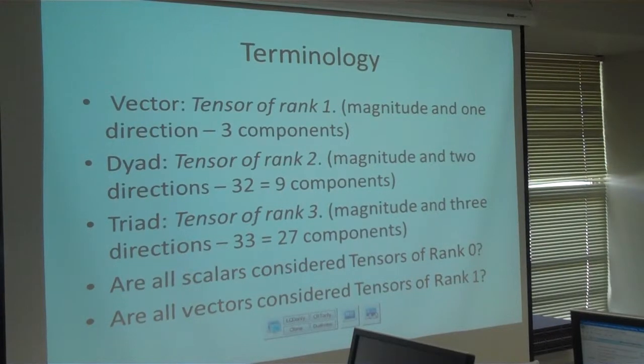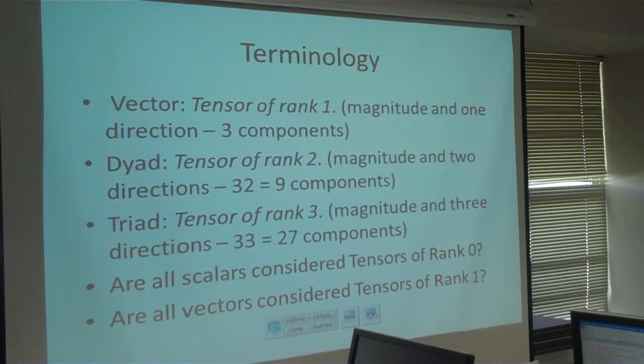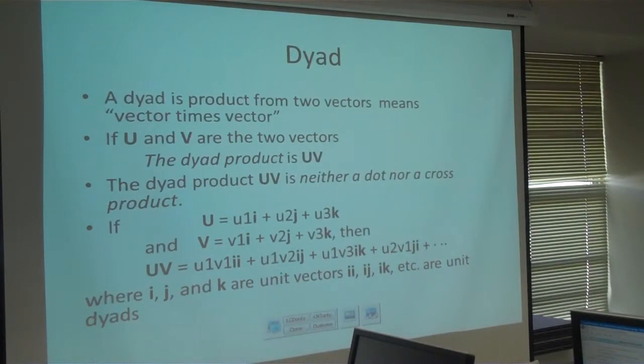What about dyad? Dyad means it is tensor of rank two. And how it will be represented? It will be represented as u, v. It has two directions. If it has two directions, it will have nine components. This is a dyad. If this will be clear, then I hope tensors will be clear.